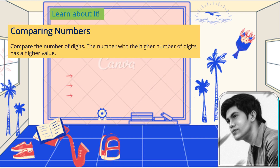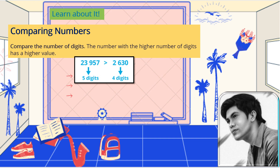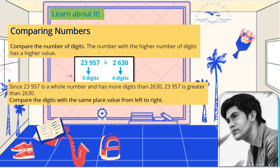Take a look: 23,957 has 5 digits. Another number, 2,630, has 4 digits. Since 23,957 has more digits than 2,630, then 23,957 is greater than 2,630, so the symbol used is greater than.